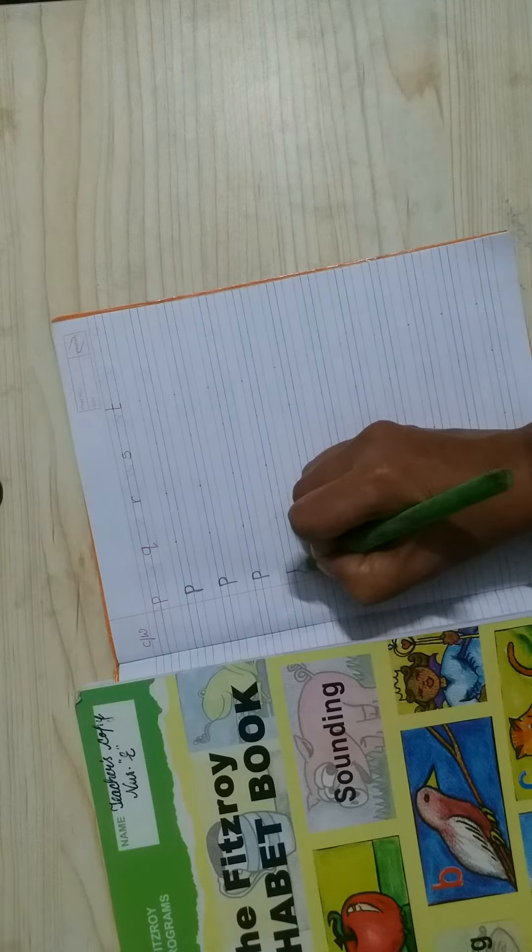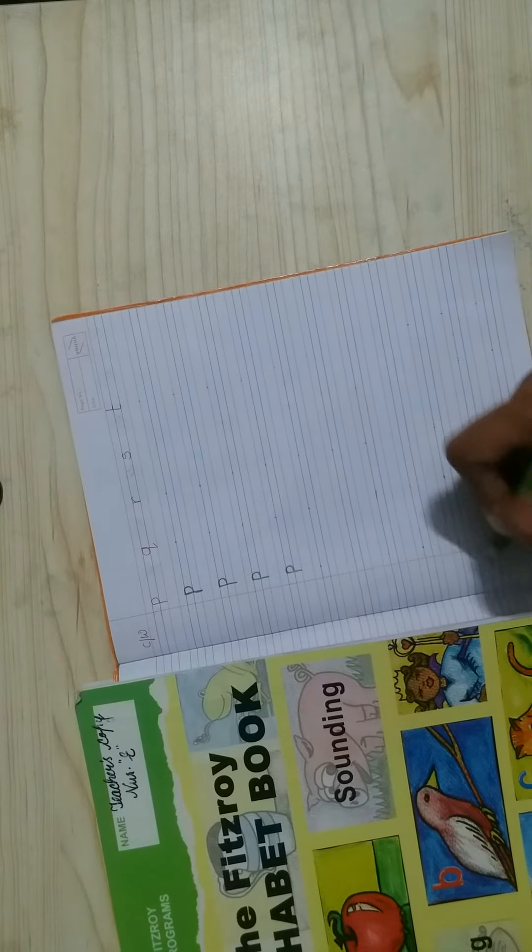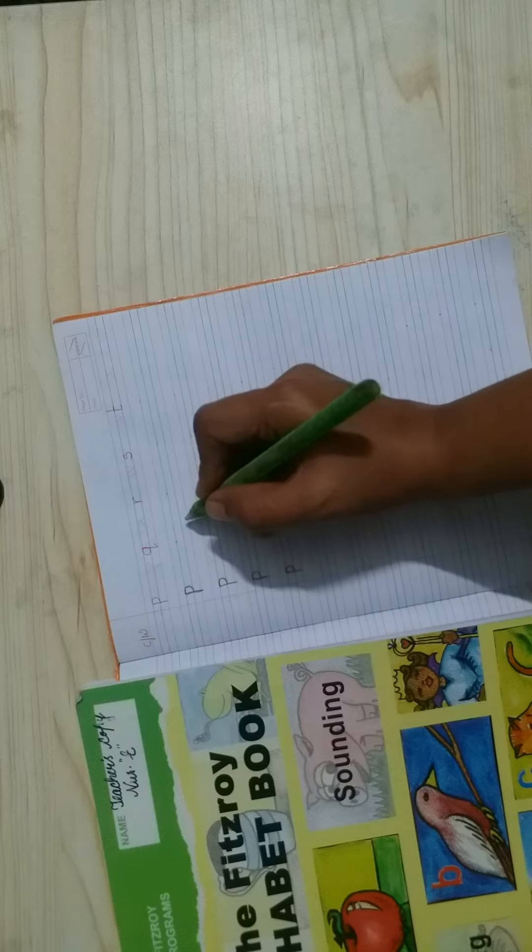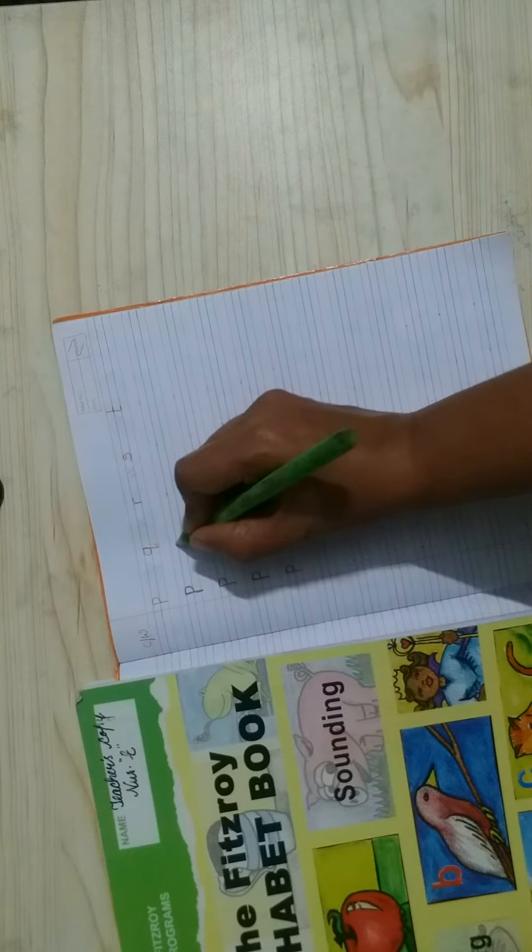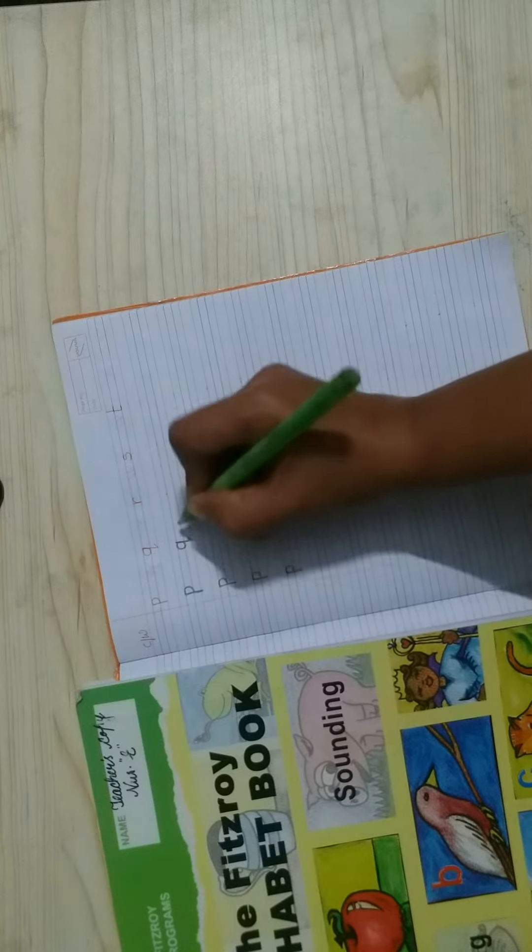Do practice like this on this whole page. Now, this is q. Q for quill. Q for quilt. Make circle, standing and then slanting.